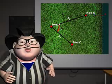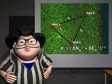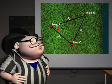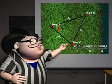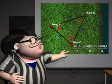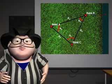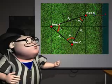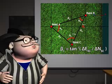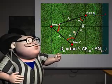The total station is used to measure alpha 3, the angle BAC. Using the horizontal distance formula, D3 is equal to the square root of delta N_BC squared plus delta E_BC squared. Using the law of sines, the sine of alpha 3 divided by D3 is equal to the sine of alpha 1 divided by D1, which is equal to the sine of alpha 2 divided by D2. The bearing between B and C, beta_BC, is equal to the inverse tangent of delta E_BC divided by delta N_CB.